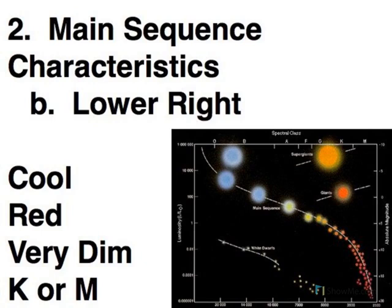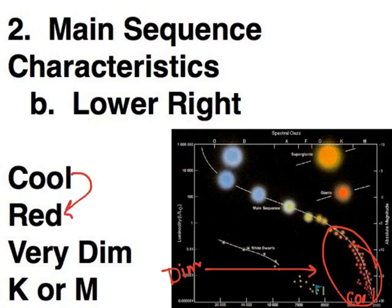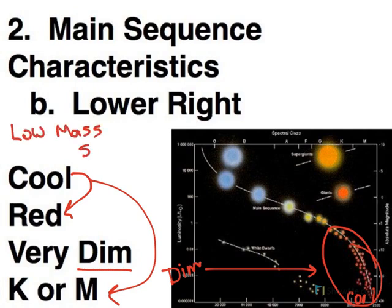The other end of our main sequence is down here in the lower right. And again, looking at our scale vertically, we're now looking at the dim part in terms of brightness, and the cool part in terms of temperature. So these stars are going to be cool, and cool is going to determine that they're red. It's also going to determine that they're K and M stars in the spectral classification system. And these stars are quite dim, and we now know that these are low mass stars.